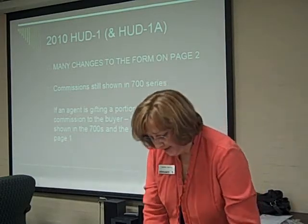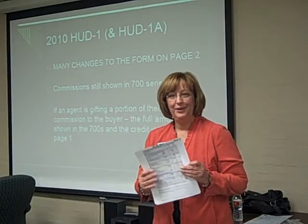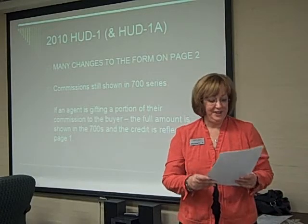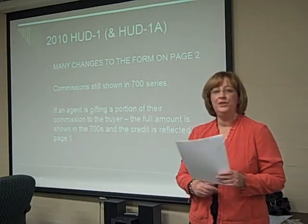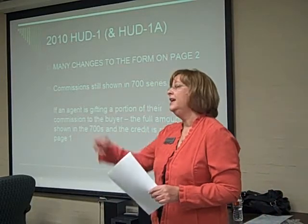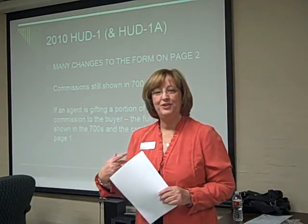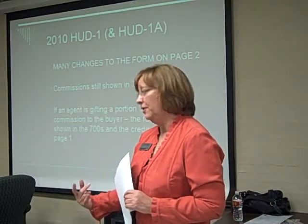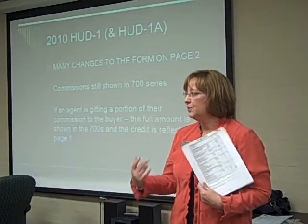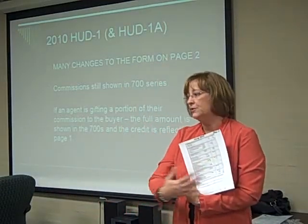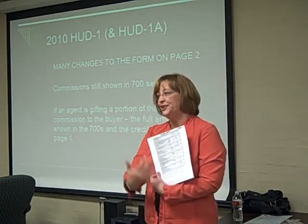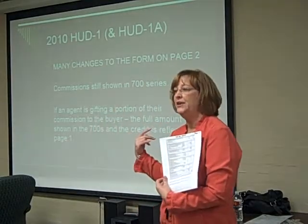Then when you get to the new HUD — your nice color-coded one — you're going to see in the 1100 series the owner's title policy is in the borrower's column. This is because HUD requires it to be disclosed on the GFE as a cost to the borrower, and anything that discloses a cost to the borrower is shown on the HUD as collected from the borrower. You'll also notice that this $1,000 worth of closing costs hasn't been moved over to the seller's side, because those are borrower's fees that the seller's going to pay later, and everything that's paid later is back up on page one.